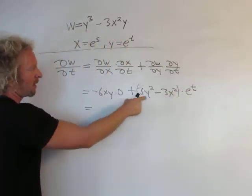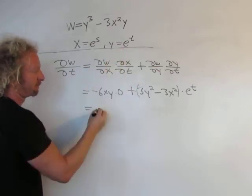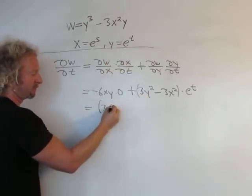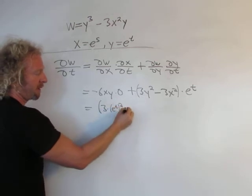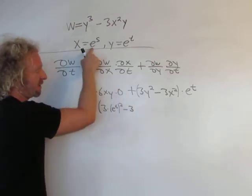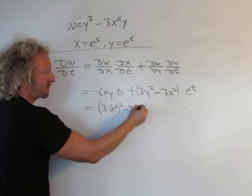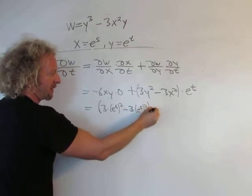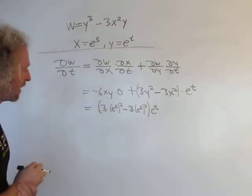That's going to be zero. Now y is equal to e to the t. So you get 3 times e to the t squared minus 3. And then x is e to the s. So we get e to the s squared. And here we get e to the t.